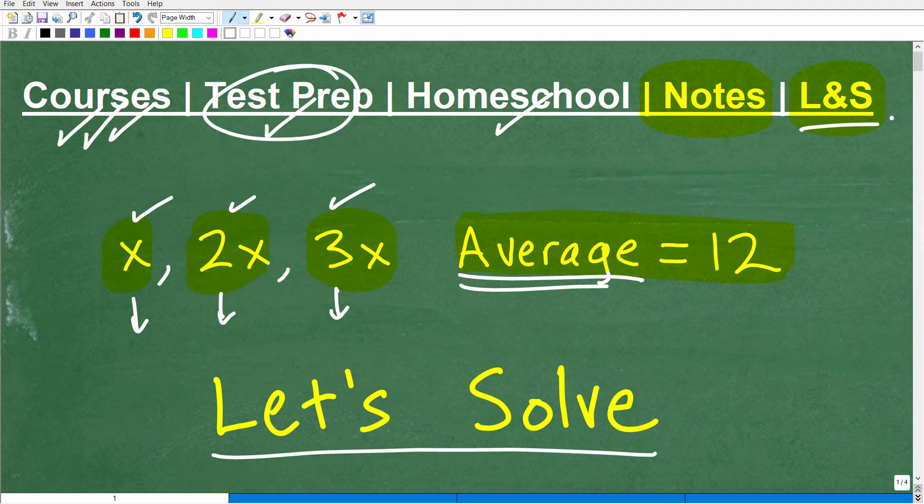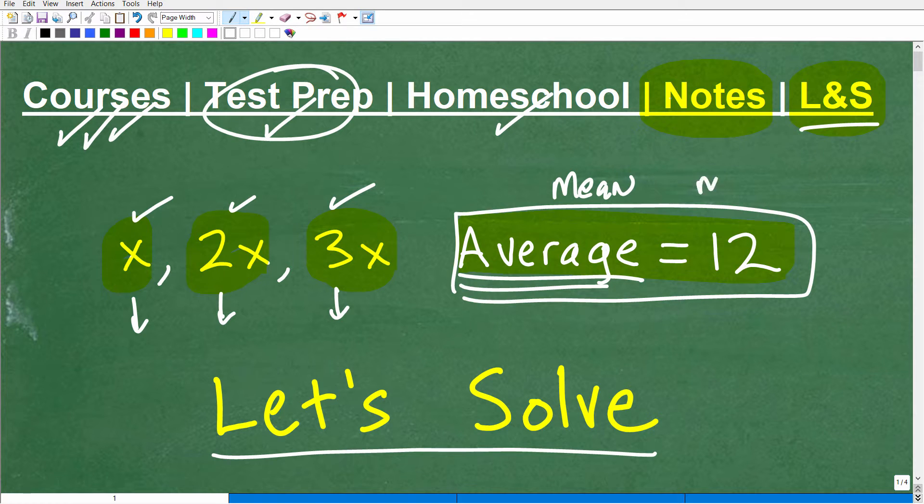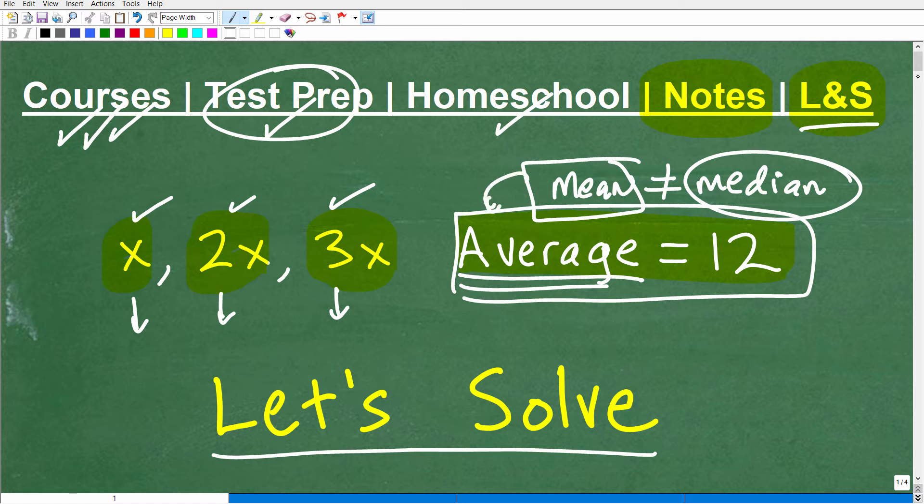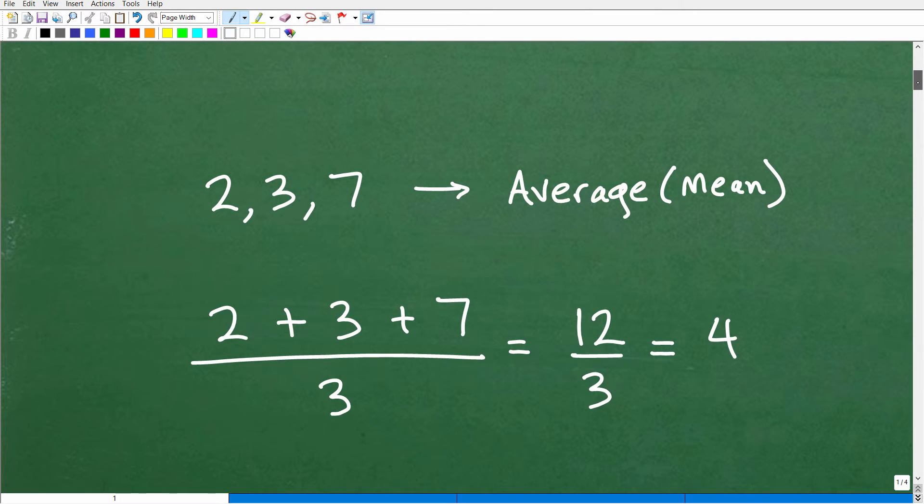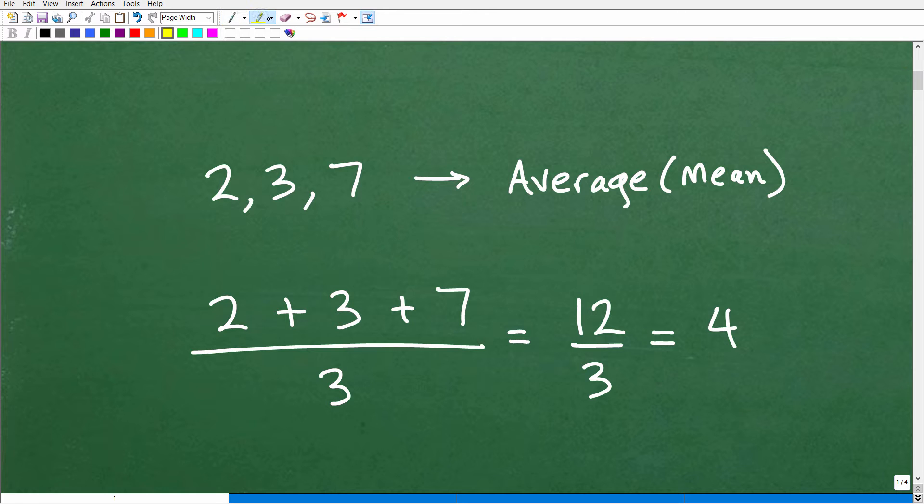All right, so let's get into this problem. And again, we're dealing with the average. Another word for the average is the mean. There's another word out there called the median. Do not confuse the median. It is not the mean. The mean is the average. But let's just review real quick how to find the average given some numbers.